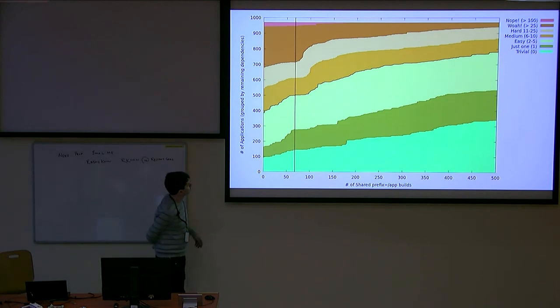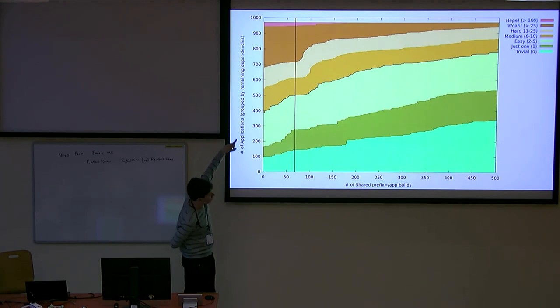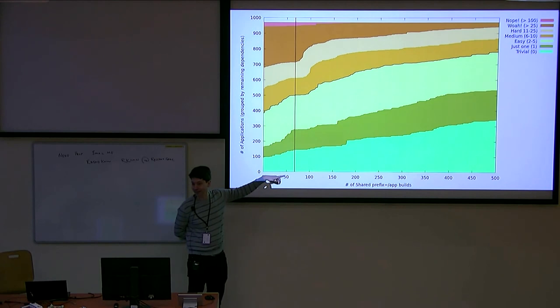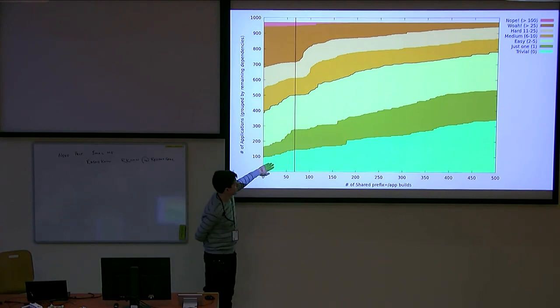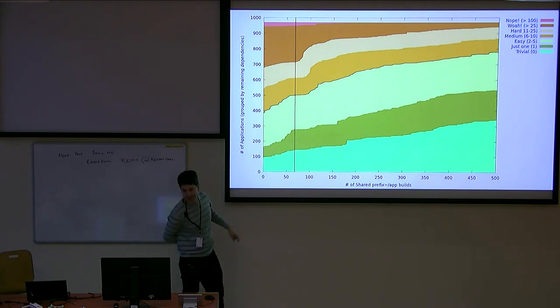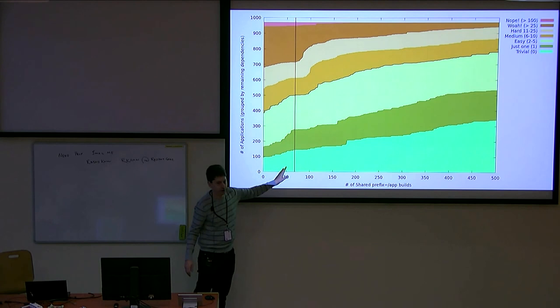This is showing what the facts are. This is listing the thousand applications that are in Fedora, how many things you'd have to bundle to make a Flatpak out of them. The green stuff at the bottom here is ones that don't have to bundle anything. The little pink thing at the top is an application where you have to bundle more than 100 libraries. That's not going to work.